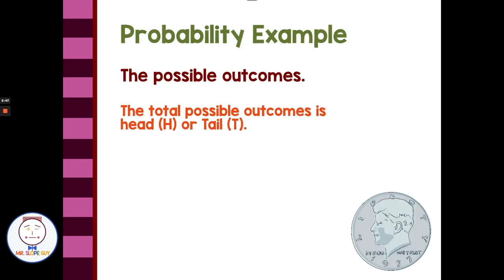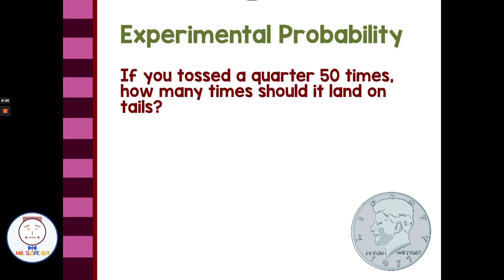With probability, we talk a lot about coins because coins represent our most basic probability. If we're flipping a coin and looking for heads, there's one positive outcome and two possibilities. The same for tails — one success compared to two possibilities. So flipping a coin gives us a probability of one-half. If we toss a quarter 50 times, how many times should it land on tails? It should land on tails 25 times.